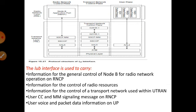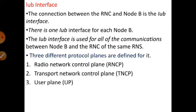The important functions performed by the IUB interface are: similar to the previous ones, it carries the general control information of Node B for operation on RNC — that is the radio network control plane. It carries the control information of radio resources, carries transport network control information within UTRAN on the transport network control plane, and carries voice and packet data information on the User Plane. One more important function is that the IUB interface of RNC carries CC — call control messages — and MM — mobility management signaling messages, similar to the first IU interface.